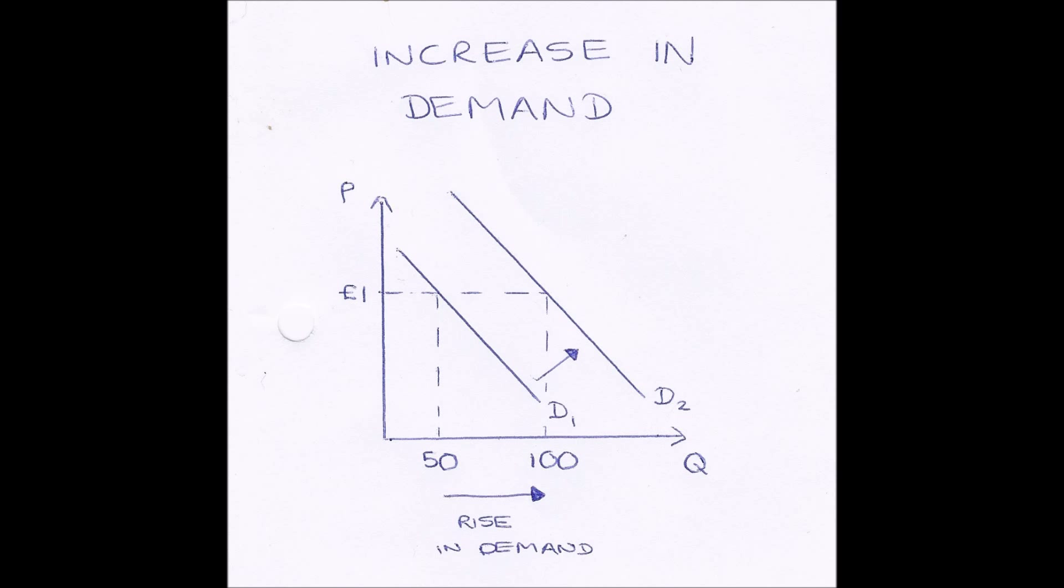However, if any of these factors that aren't price which affect demand cause an increase in demand, our curve shifts to the right, the other way around. So say for example, the income of the population rose. So therefore people have more money to spend. So therefore they will buy more goods. So therefore demand will increase.